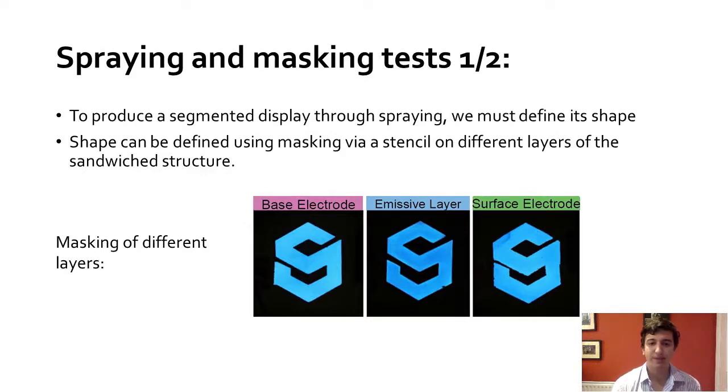To produce a segmented display through spraying, we must define its shape. Segments can be shaped using masking via a stencil on different layers of the sandwich structure. We performed a test to compare masking of different layers. We concluded that masking either the surface electrode or the base electrode produced the cleanest results.